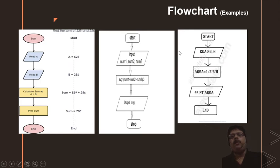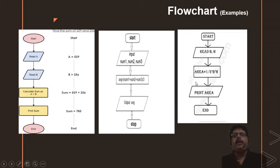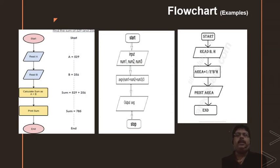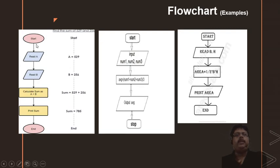In the next example, instead of 'input', the 'read' statement is used — it is the same; you can use different English words. We read B and H for breadth and height. The area is calculated in a rectangular box. Here the output is labeled as 'print' instead of 'output'. I have kept three different types of flowcharts so you understand that wording is not important — you can change the wording, but the symbols and the method in which you write are very important. These are connected with arrows, showing the sequence or order in which they are executed.